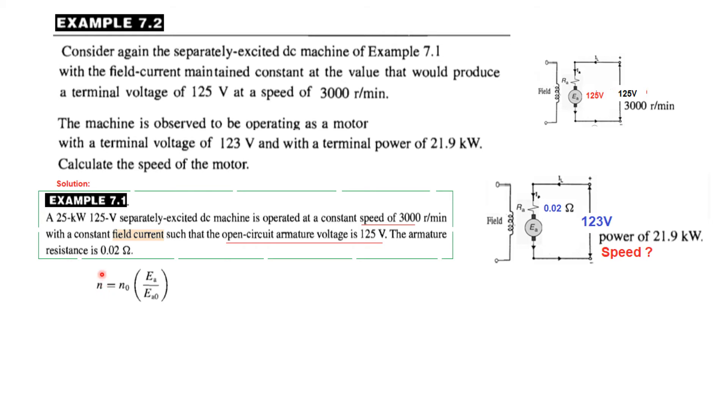So this is the speed that we want to find out. N0 is the reference speed which is 3000. In this case we'll take that as the reference speed divided by Ea, the new induced voltage, and this is the reference voltage induced voltage across the armature. So we'll take this to be the reference voltage. These two are known. Now we have to first of all find out Ea from this circuit.